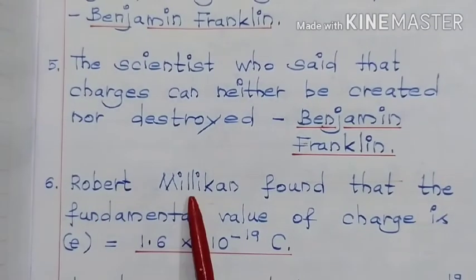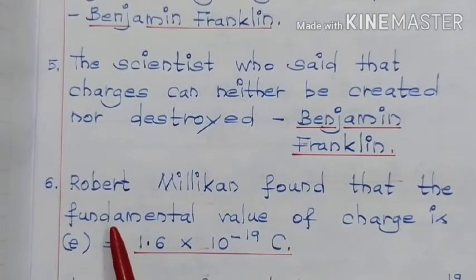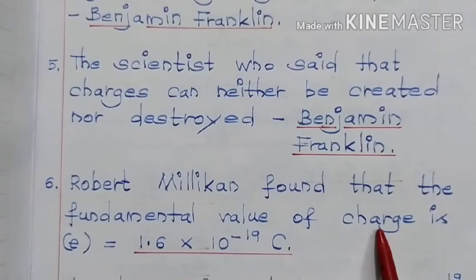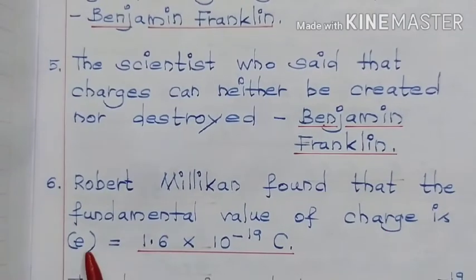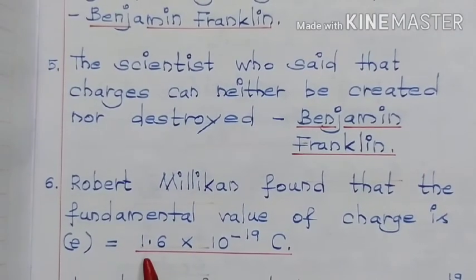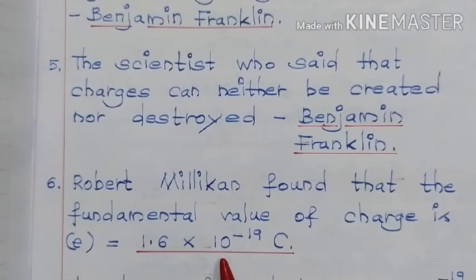Robert Milliken found that the fundamental value of charge, that is small e, is equal to 1.6 × 10^-19 Coulomb.